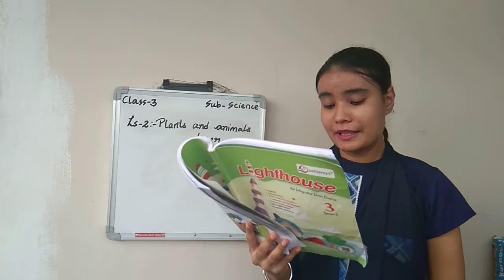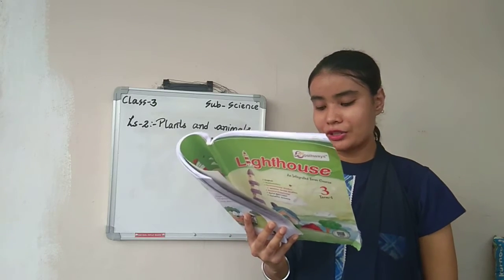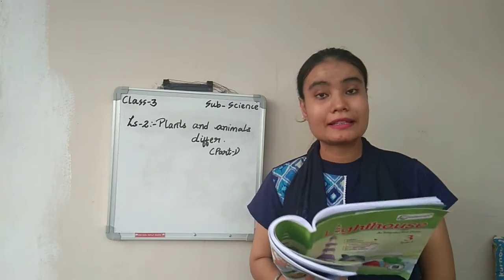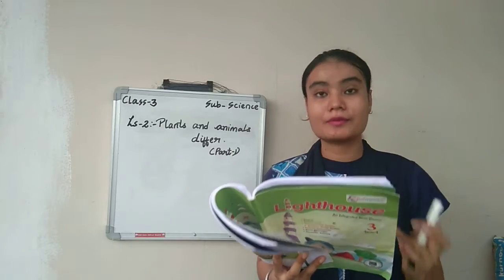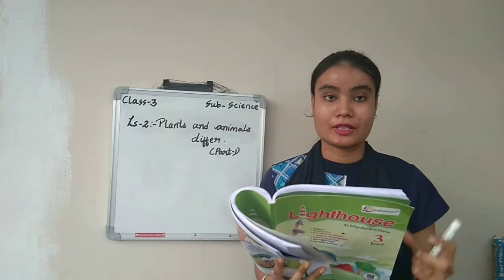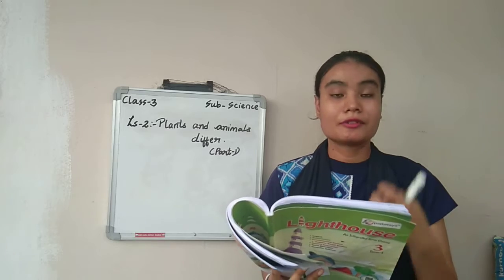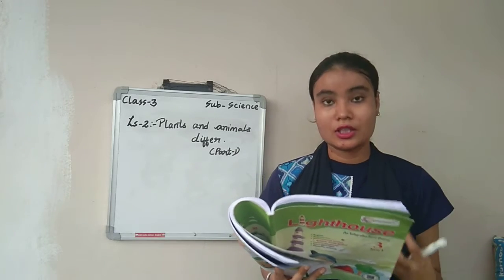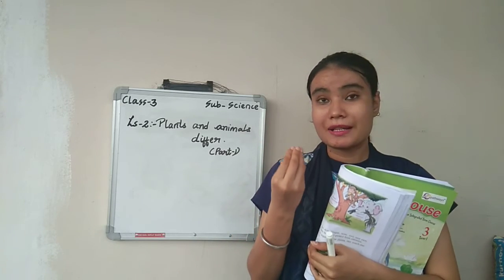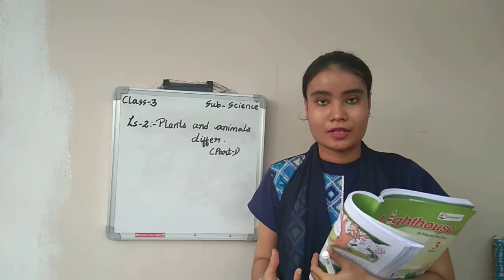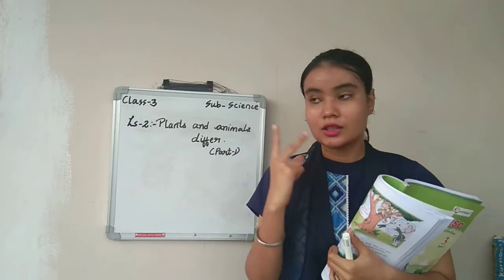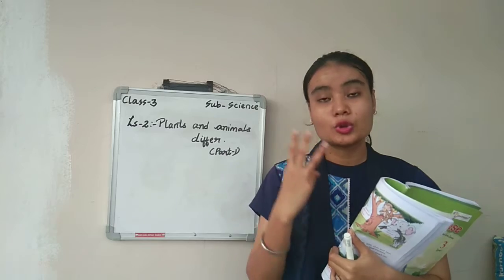Next: Food. Green plants make their own food. They make it in their leaves using carbon dioxide, water, and sunlight, so they do not need to move in search of food. All green plants can prepare their own food using their leaves as the main source. For that, they do not need to move from one place to another, because they can get their food just by staying in one place. The three things they need are water, carbon dioxide, and sunlight.